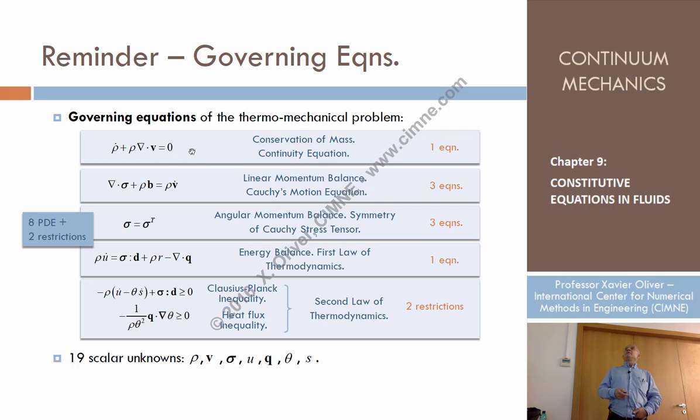What do we have? Well, we have the mass conservation, the typical continuity equation. We have the linear momentum balance, Cauchy's equation. Now we consider the full dynamic case, we have accelerations. We have the angular momentum balance, we have the symmetry of the Cauchy stress tensor. We have the energy balance, and these are not equations, are inequations, the second law of thermodynamics which we split into two different equations, the Clausius-Planck equations involving an inequality, a positive inequality and the heat flux inequality, a positive inequality too.